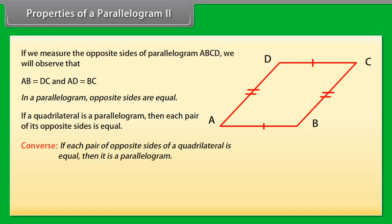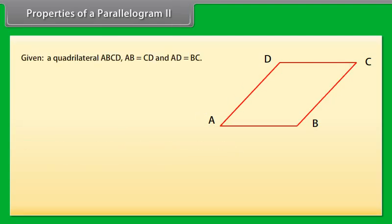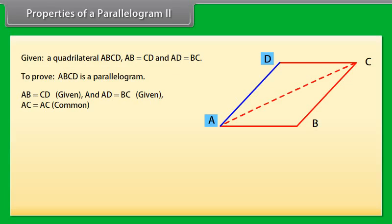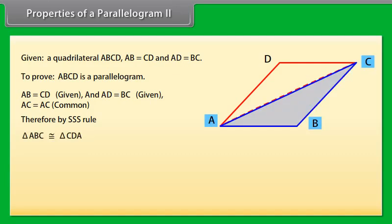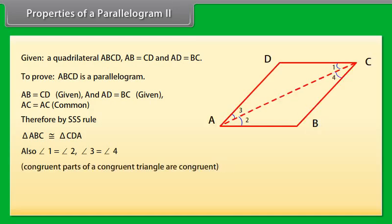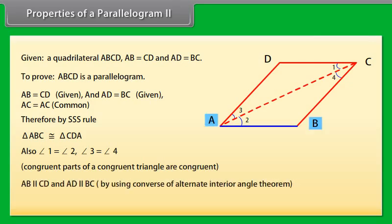The converse says: if each pair of opposite sides of a quadrilateral is equal, then it is a parallelogram. Proof: Given quadrilateral ABCD where AB equals CD and AD equals BC. Draw diagonal AC. Since AB equals CD, AD equals BC, and AC equals AC (common), by SSS rule triangle ABC is congruent to triangle CDA. So angle 1 equals angle 2 and angle 3 equals angle 4 (CPCT). Therefore AB is parallel to CD and AD is parallel to BC, hence ABCD is a parallelogram.